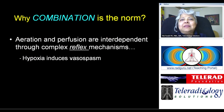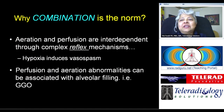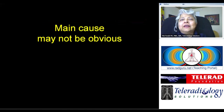The best example I can come up with is hypoxia-induced vasospasm. When you have an endobronchial obstructing lesion, you will have hypoxia-induced vasospasm in the lung distal to the point of obstruction. Perfusion and aeration abnormalities are often associated with alveolar filling or ground glass opacities. So you always have a combination of abnormalities, and the main cause may not be obvious.